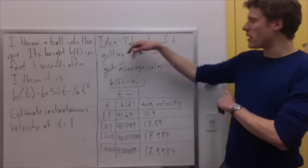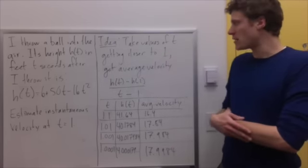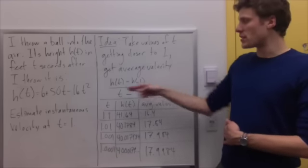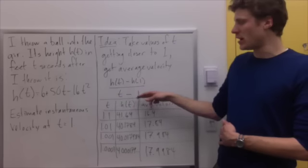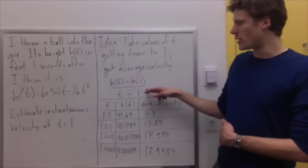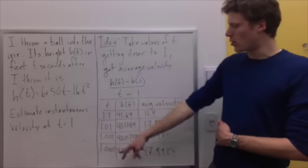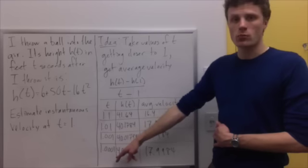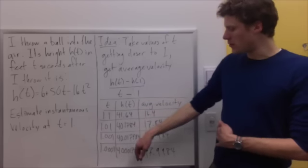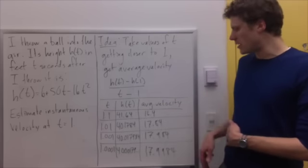Well, the idea here is I'm going to take values of t that are getting closer and closer to 1 and take the average velocity between time t and time 1. The average velocity is given by the change in height over the change in time. So that's h(t) - h(1) over t - 1. So I've taken the values of t: 1.1, 1.01, 1.001, and 1.0001. The corresponding height values are in the second column. And in the third column, I get the average velocities.